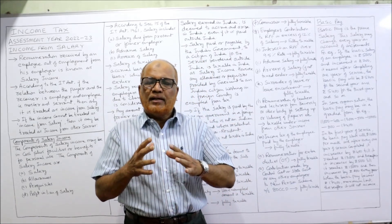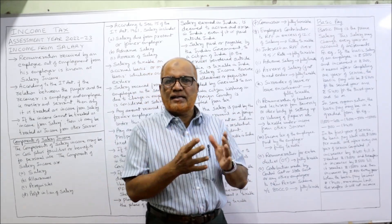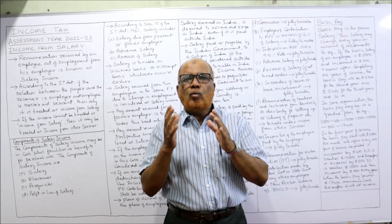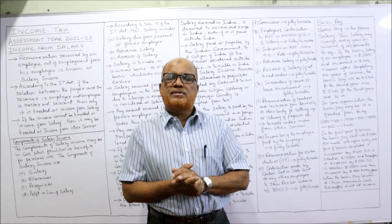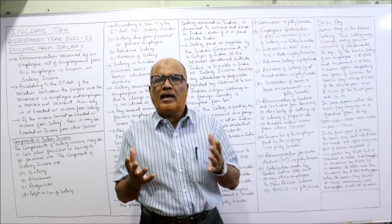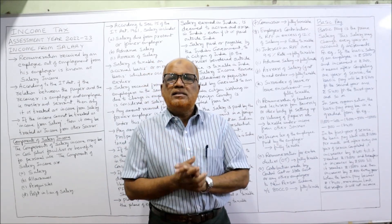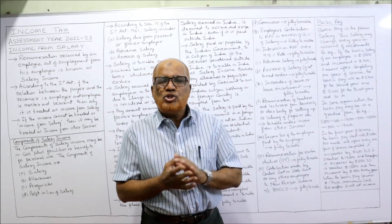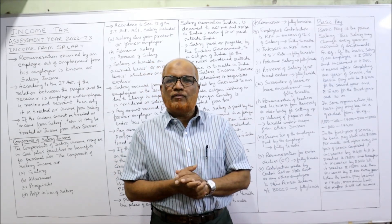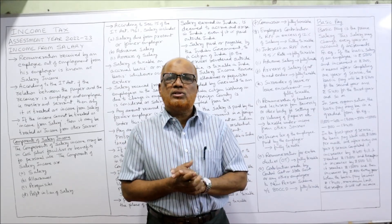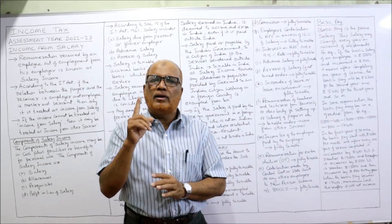In Unit 1, we covered: what is tax, the different types of taxes — direct tax, indirect tax — and the basic concepts. Then we covered tax rules and exemptions, agricultural income, residential status, and incidence of tax. All those concepts have already been completed in Unit Number 1.